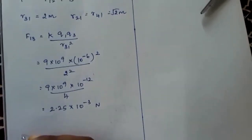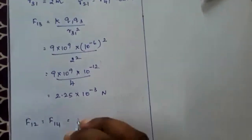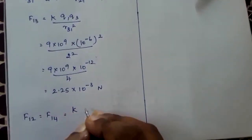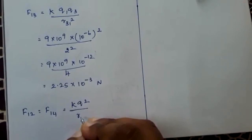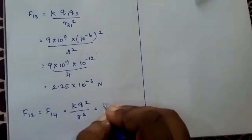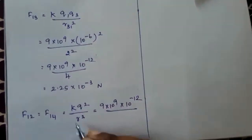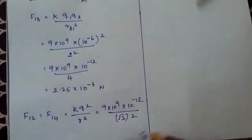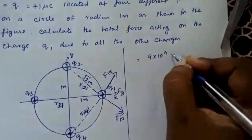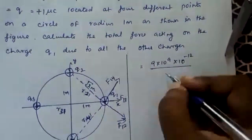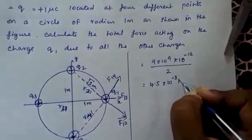Now we can find F12 and F14. F12 equals F14, which equals K times Q squared divided by R squared. Since R21 and R41 are both root 2 meters, it is 9×10⁹ × (10⁻⁶)² divided by (root 2)², which is 9×10⁻³ divided by 2, giving 4.5×10⁻³ newton.